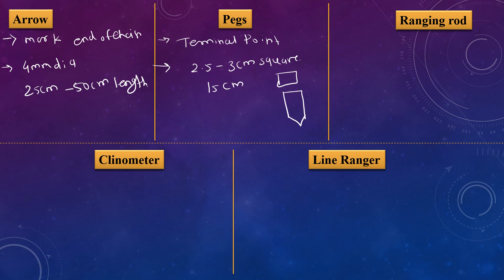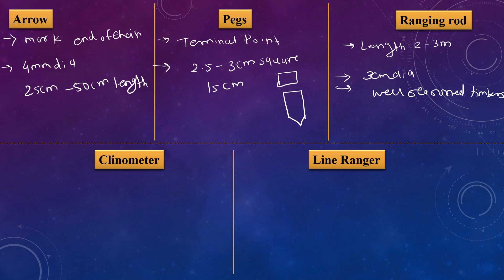Next is the ranging rod. The ranging rod has a length of 2 to 3 meters and a diameter of 3 cm. Ranging rods are made of well-seasoned timber. The ranging rod is used to show the intermediate points during chaining or surveying.